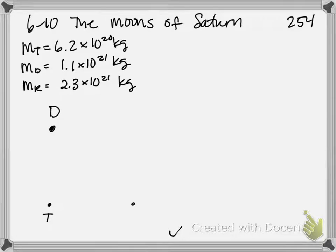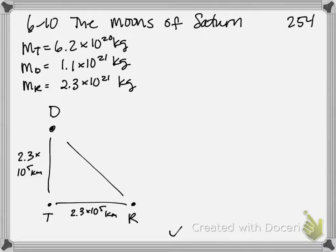And we have Rhea here. And so we have this little triangle, where this distance is 2.3 times 10 to the 5th kilometers. This distance also 2.3 times 10 to the 5th kilometers. And then this hypotenuse, which I guess we have to solve for. So at some arbitrary point in time, they make this isosceles triangle.